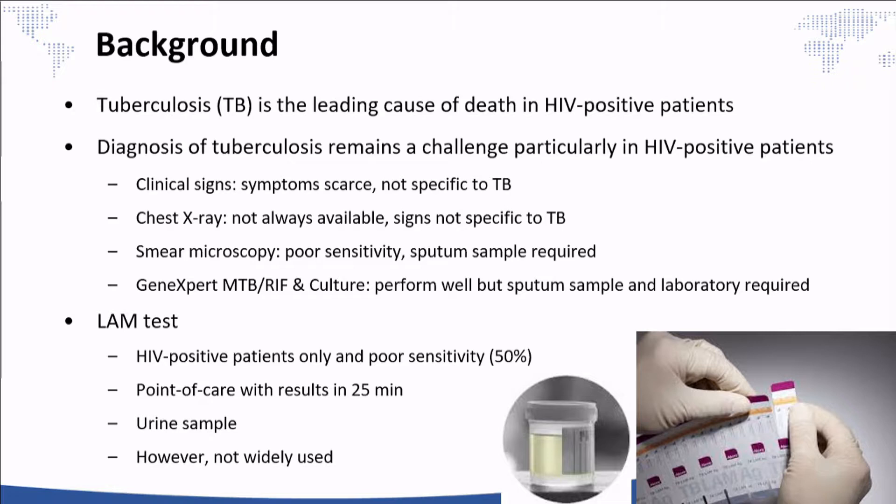LAM is a new test that is useful for diagnosis of tuberculosis in HIV positive patients, but has a poor sensitivity of around 50%. However, this test has other advantages, such as being a point-of-care test with rapid results in 25 minutes. It uses a urine sample instead of sputum, which is an advantage for patients who cannot produce sputum. Despite these advantages, this test is not widely used.